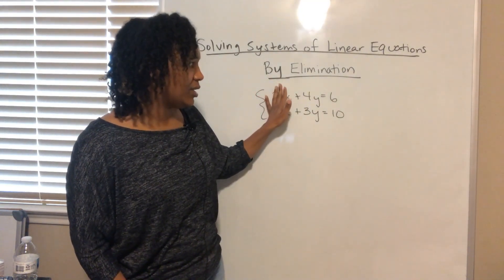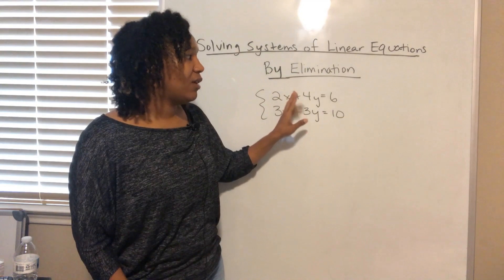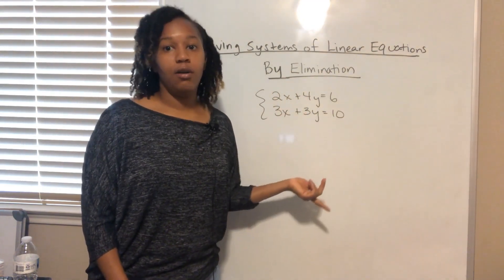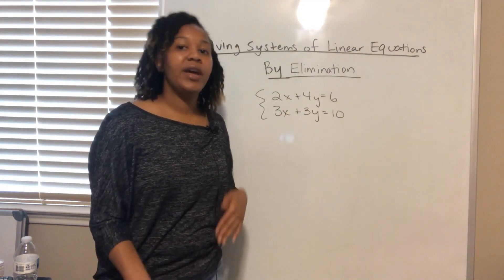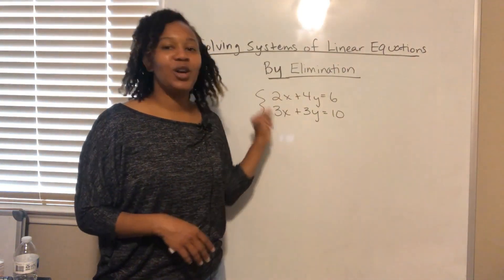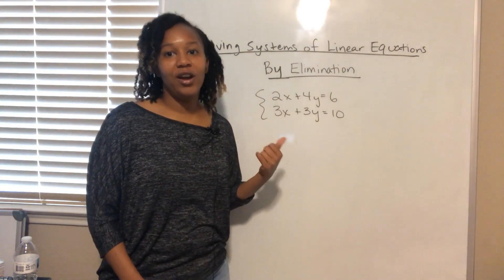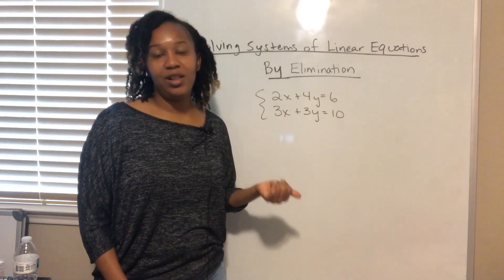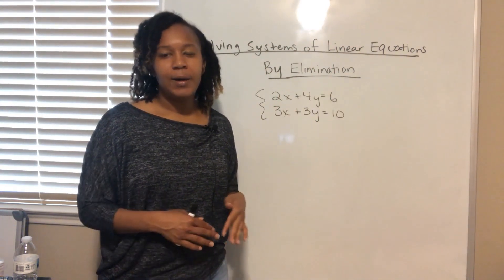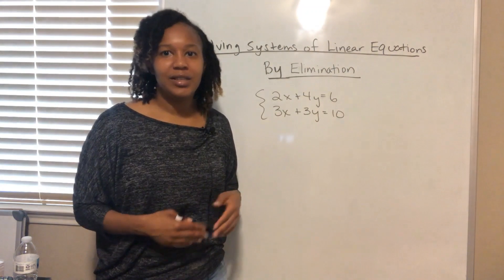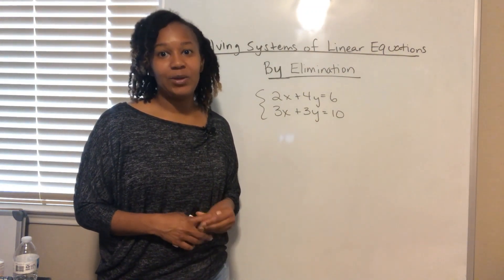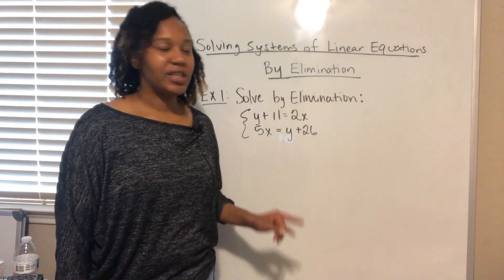We add the two equations together, and that will eliminate one of the variables. For example, if we eliminate x, we'll be left with an equation with one variable which we can solve. Then we'll solve for that variable and go back and plug it into one of the original equations to solve for the variable that we eliminated. It sounds like a lot but once you get going and practice it, it's really not that bad.